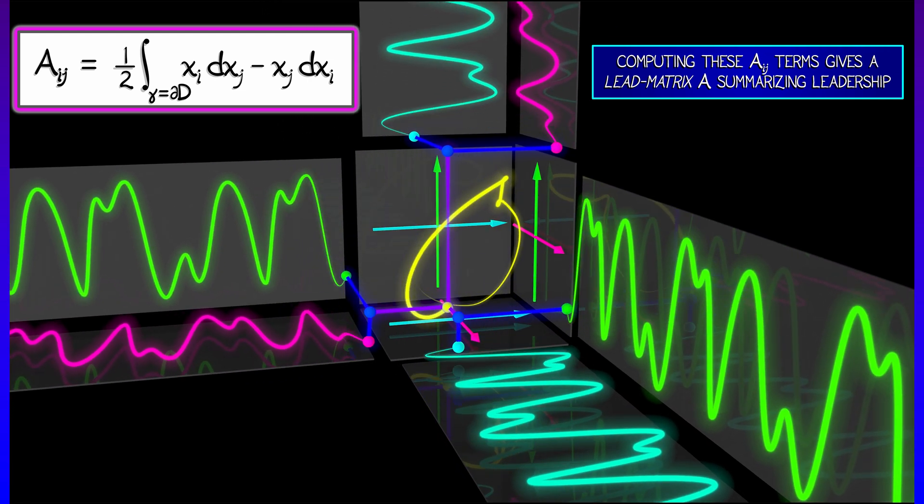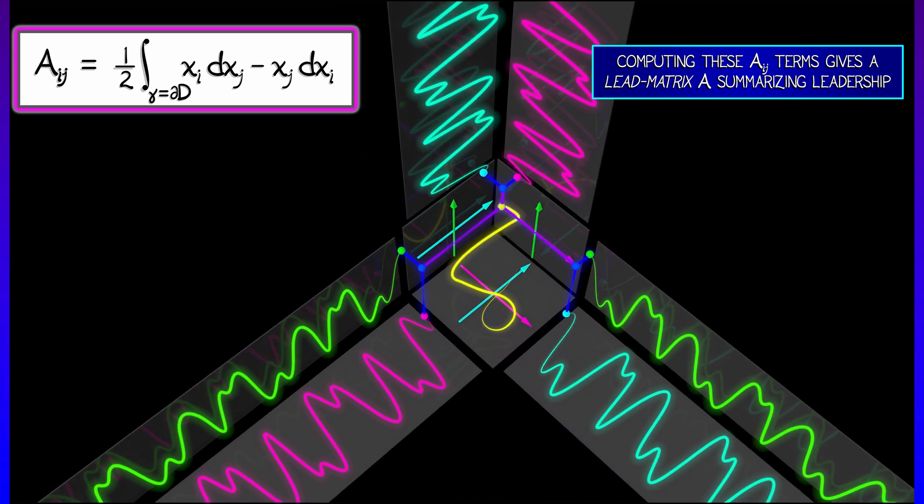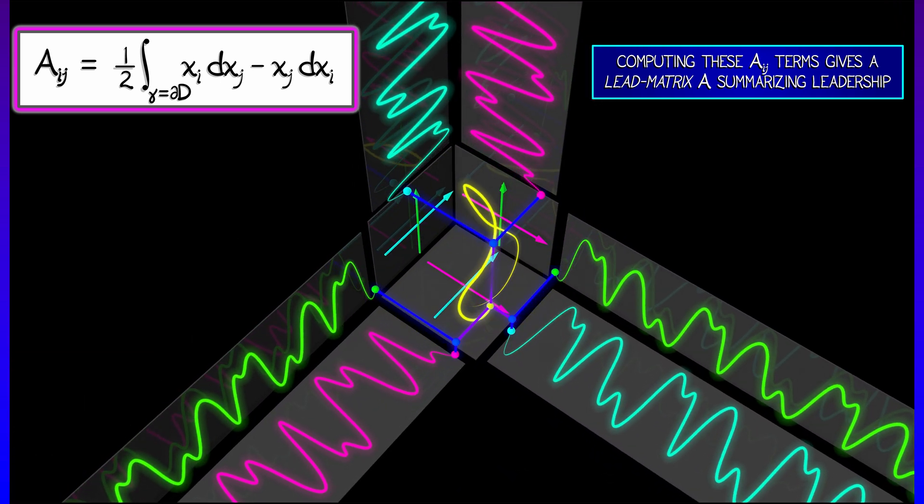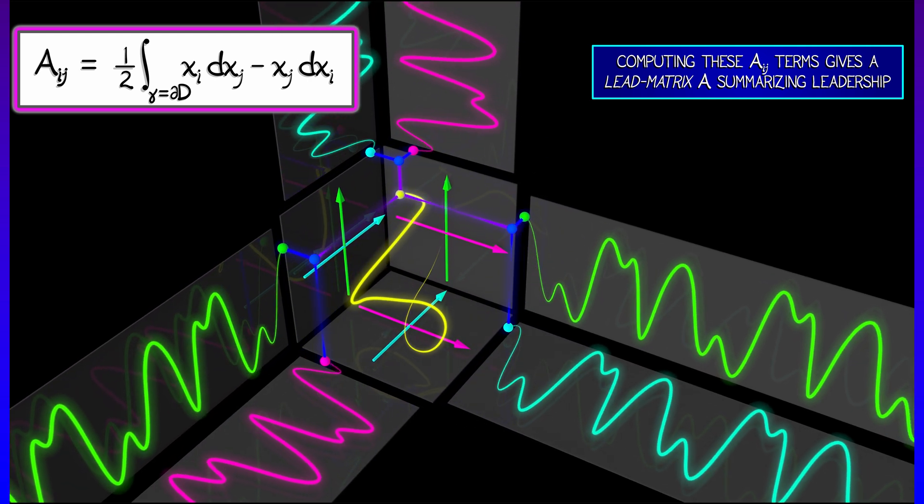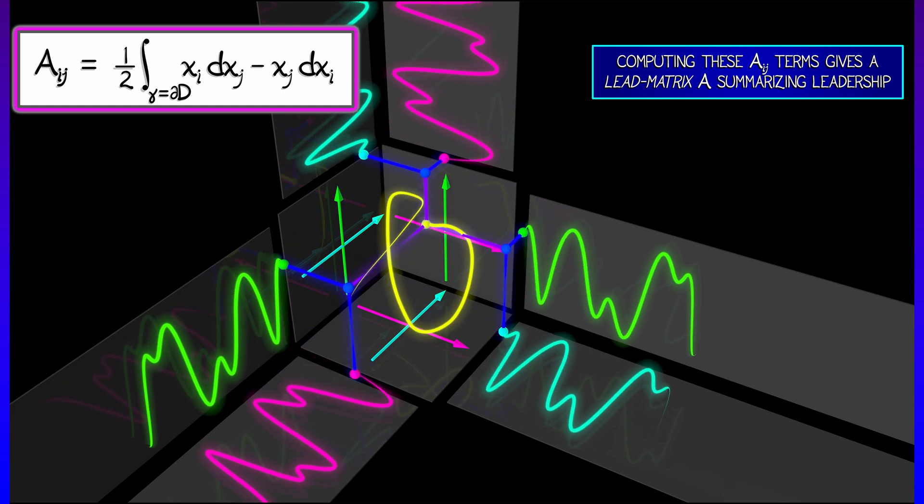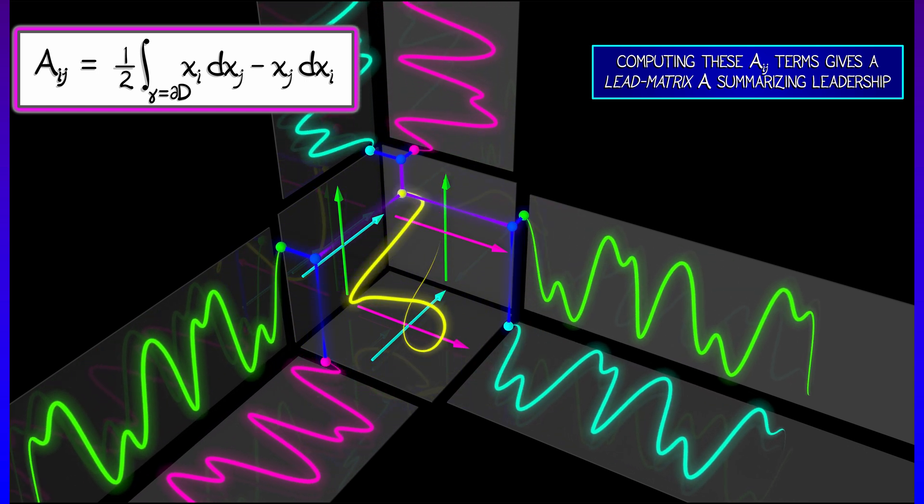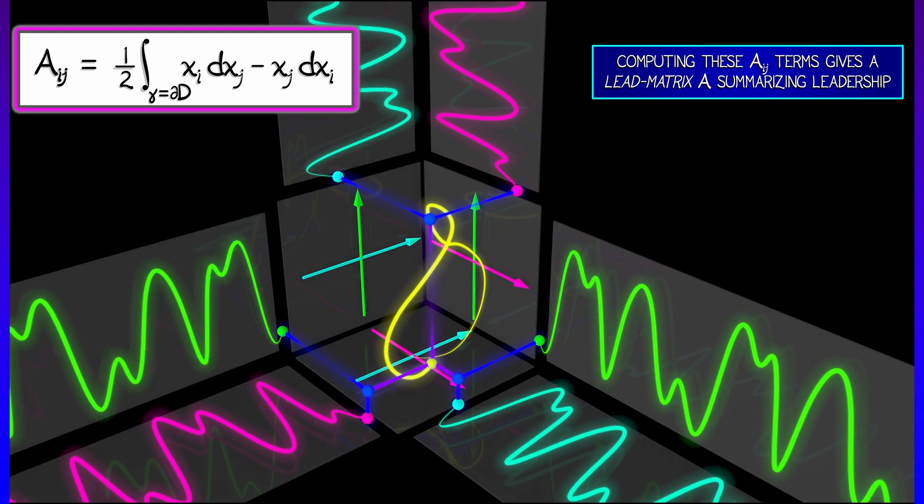And computing this is going to give us that term a sub ij that tells us something about whether xi is leading or lagging xj. And in fact, what we can do is compute this for all values of i and j and pop them into a matrix, a lead matrix that summarizes all leading and lagging behavior. That is really cool to think about how you can work in the full n-dimensional space and just integrate these various one-form fields.